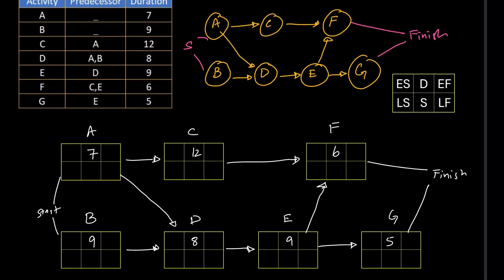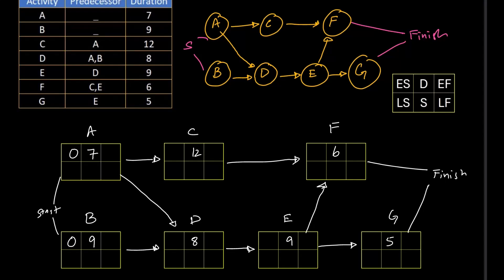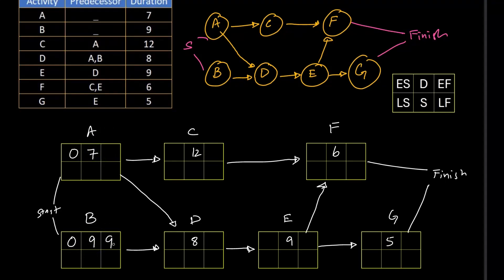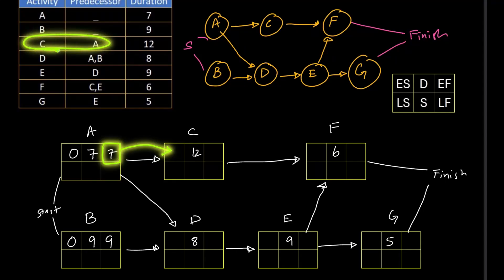Now we need to write early finish and early start. Since A does not have any predecessor and B also does not start after any activity, the ES box for both can be labeled as 0. Duration of A is 7, so the early finish for A is 7. Similarly, early finish for B is 9. This 7 carries to C since C starts after the completion of A.